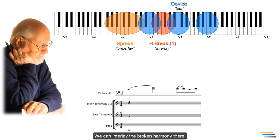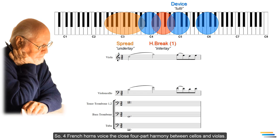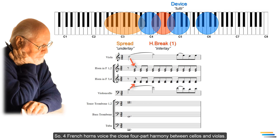There's a free space between cellos and violas. We can interlay the broken harmony there. So, four French horns voice the close four-part harmony between cellos and violas. Horns play the C major add 2 chord with the horizontal break method.